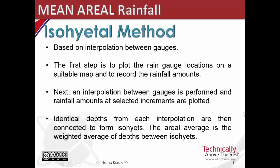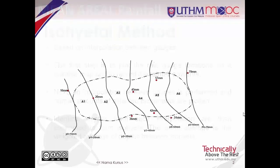The isohyetal method is based on interpolation between gauges. It closely resembles the calculation of contours in surveying and mapping. The first step in developing an isohyetal map is to plot the rain gauge locations on a suitable map and to record the rainfall amounts. In this figure, there are 8 rainfall stations with their rainfall amounts.